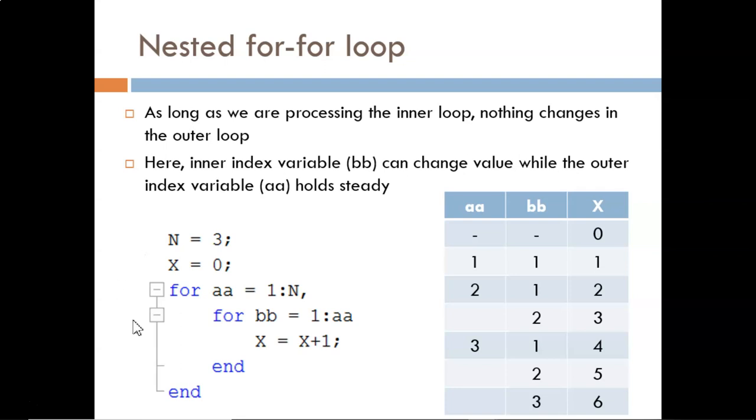Here we see an example of a for loop nested inside of another for loop. While the inner loop is being processed, no changes will take place involving variables in the outer loop. In this example, BB and X can change multiple times while AA is held constant.